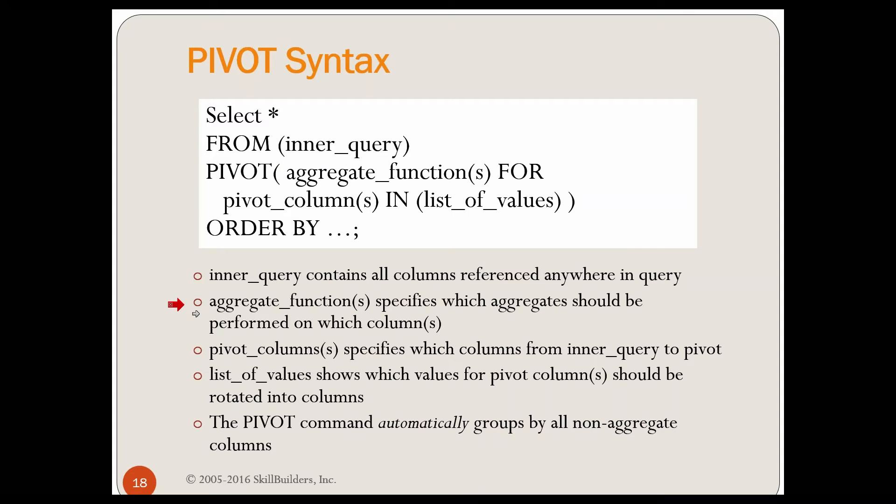What are they going to do? The aggregate functions are going to say which columns do I want to do aggregates on: sums, counts, mins, max, whatever it is, average. Which columns do I want to do aggregate functions on, and what aggregate functions do I want to perform on them? That tells me which aggregates I want, but now I have to also tell it which columns I'm going to pivot. So I have to specify one or more columns in my pivot list. The pivot columns is which columns from the inner query are you going to do pivoting on?